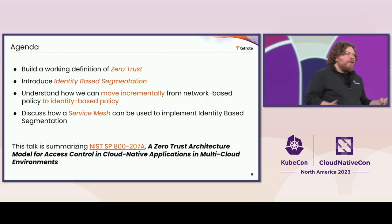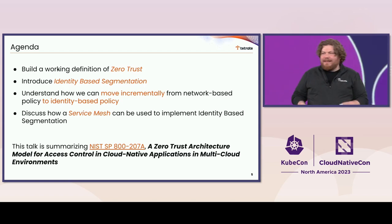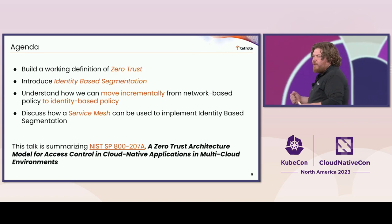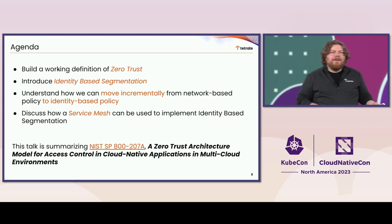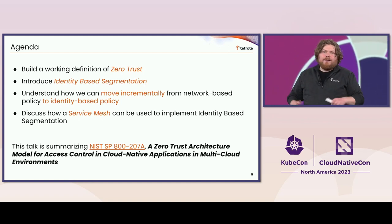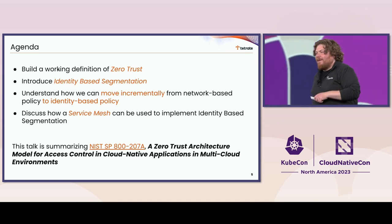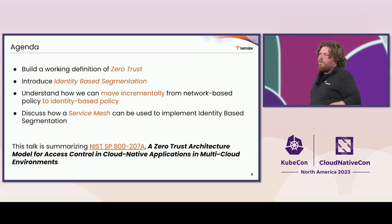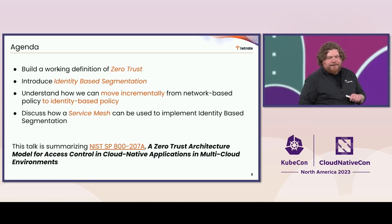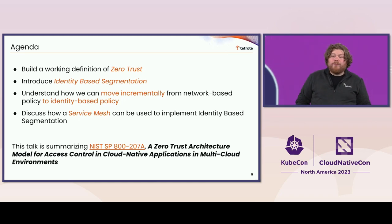So with that, today the first thing I want to equip you all with is a working definition of Zero Trust. There's a lot of FUD in the space around what Zero Trust is or isn't, so we want to get to the bottom of that and have a real concrete definition. I'm going to introduce identity-based segmentation — that's the primary idea we brought out in 207A. If there's one thing you take away from today, take away identity-based segmentation. We'll talk about how to move incrementally from today into an identity-based model, and finally I'll spend time on how you can implement this with a service mesh.